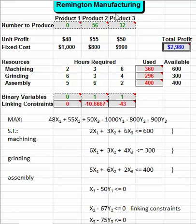In this problem we have three different products with unit profits of $48, $55, and $50, and there's a fixed cost associated with each product: $1000, $800, and $900. If you're producing—if this number here is larger than zero—then the fixed cost has to be applied to our objective function.